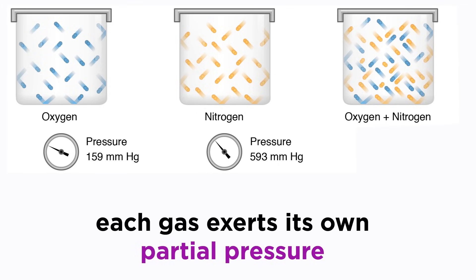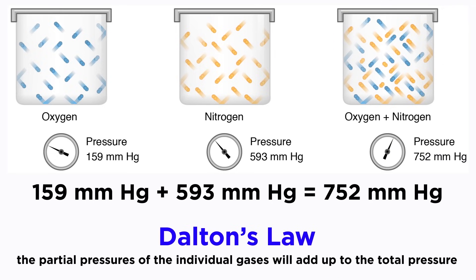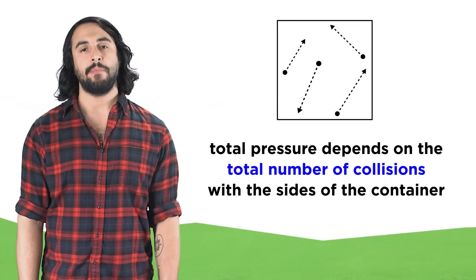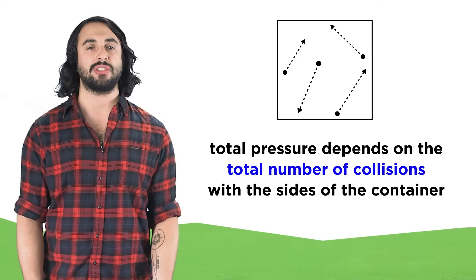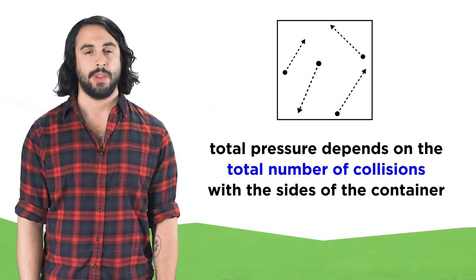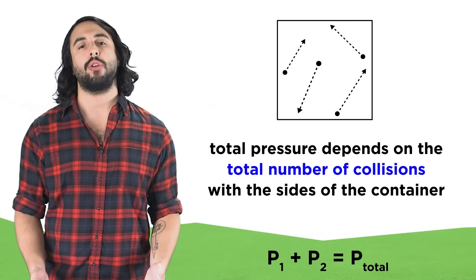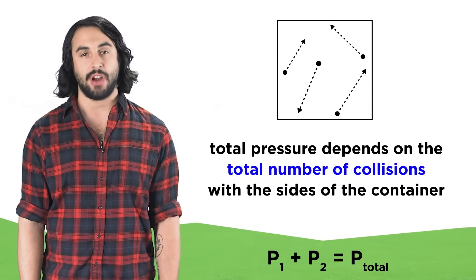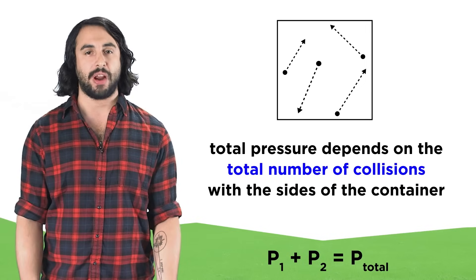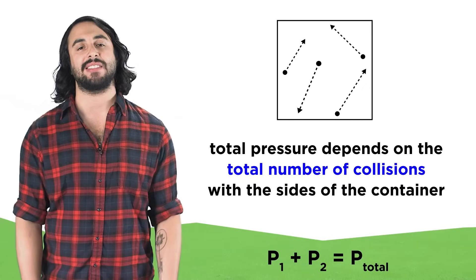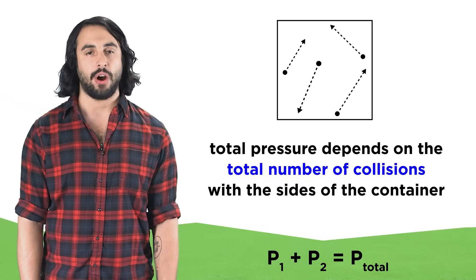In order to find the total pressure of the vessel, we will simply add up the partial pressures. This is stated in Dalton's law. When you think about it, it makes perfect sense, since pressure is just the force exerted as particles strike the sides of the container. So the pressure from all the particles of one gas, plus the pressure from all the particles of another gas, should add up to be the total pressure for all the particles, assuming we are treating these as ideal gases where their identities are irrelevant.